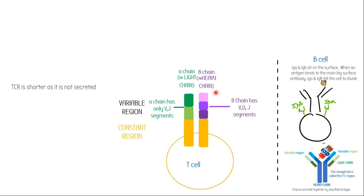Be specific with the terminology — don't call this the light chain, call this the alpha chain. With T-cell VDJ recombination, there are more VDJs to choose from, so there are more combinations possible and therefore greater diversity of receptor. Therefore the receptor is even more specific than the antibody — if you thought the antibody was specific, the T-cell receptor is even more specific.